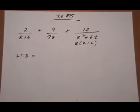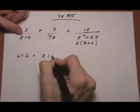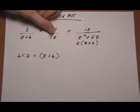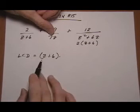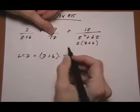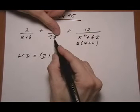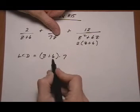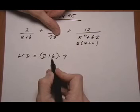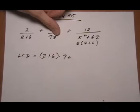To build the LCD, take the first denominator entirely, multiply that by any factor in the second denominator that's not already contained here. There's no 7 and there is no Z as a separate factor. Z is here as part of another factor, a binomial, but Z by itself is not there yet, so we're going to multiply that in.